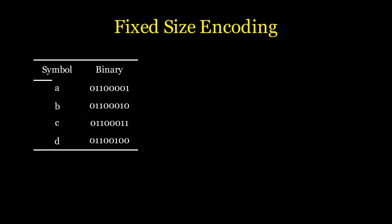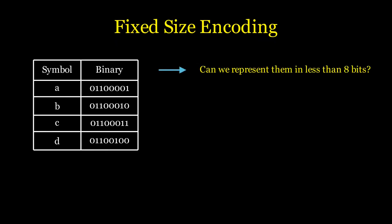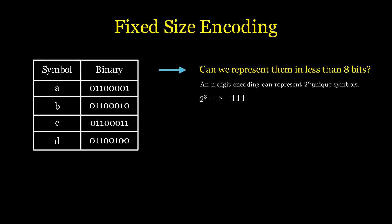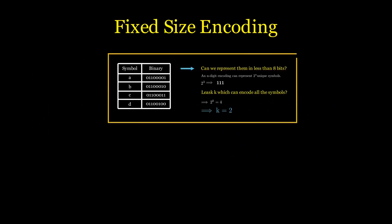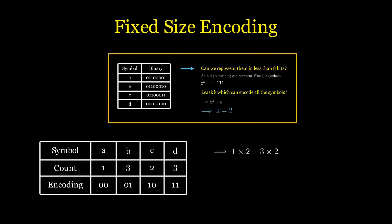If we can somehow represent our symbols in less than 8 bits, we will see an improvement. An n-bit encoding can represent 2^n unique symbols, because each of those n places can either contain 0 or 1. Thus, to find the least k which can encode our 4 symbols, we can use this concept and obtain the size of 2. We will again calculate the cost of the message but with the encoding size of 2 to get our message cost as 18 bits.